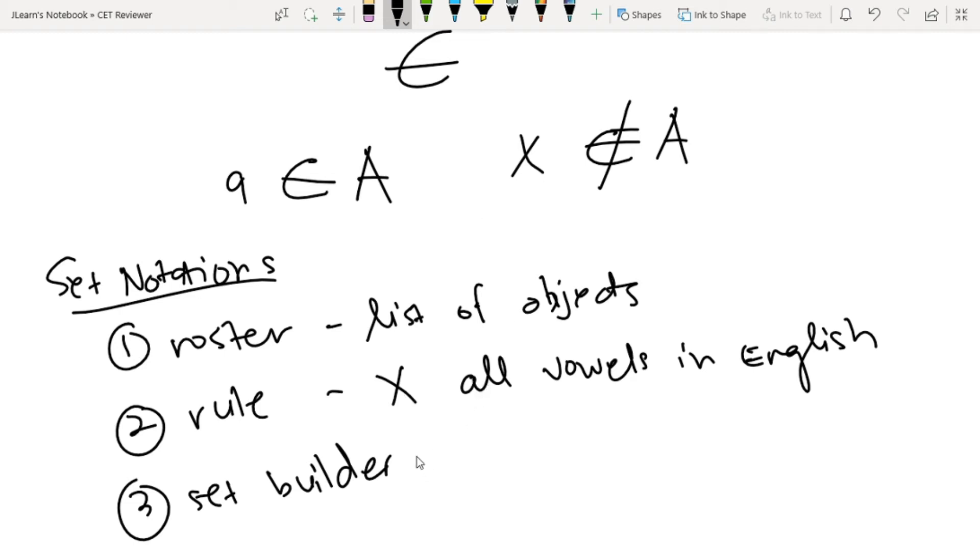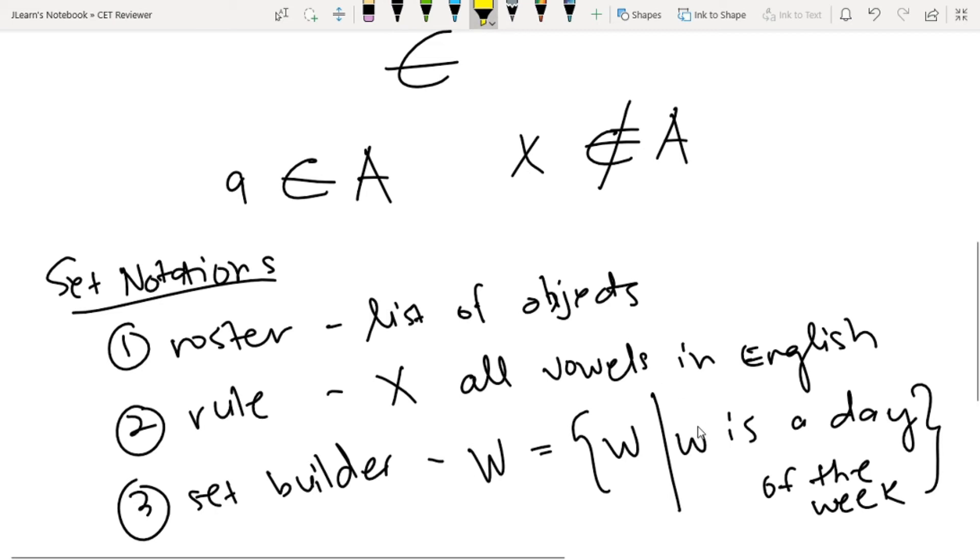Set builder notation: we make a variable that represents the rule. For example, W is equal to w such that w is a day of the week. This is the rule and this is the variable. This is small letter w and this is big letter W.